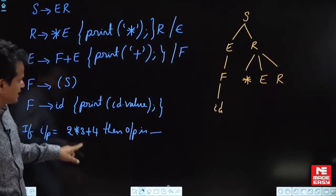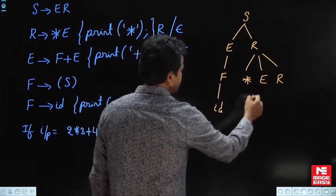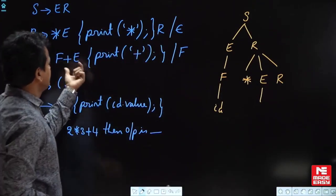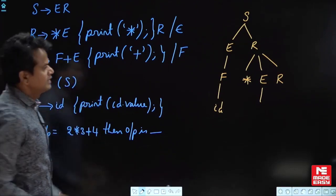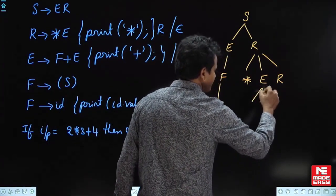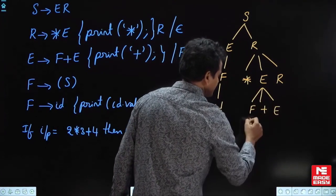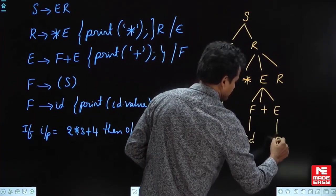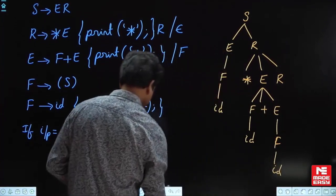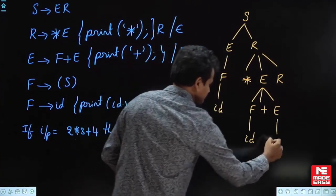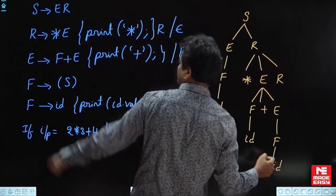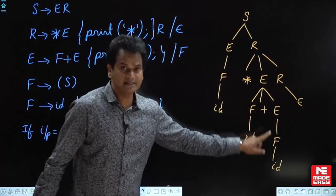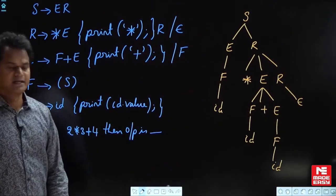We got the id, then star, then we want another id. In E place, I must write id plus id. So in E place go for F plus E. F place id, then E place F, F place id, and R place epsilon. Now we have id star id plus id.